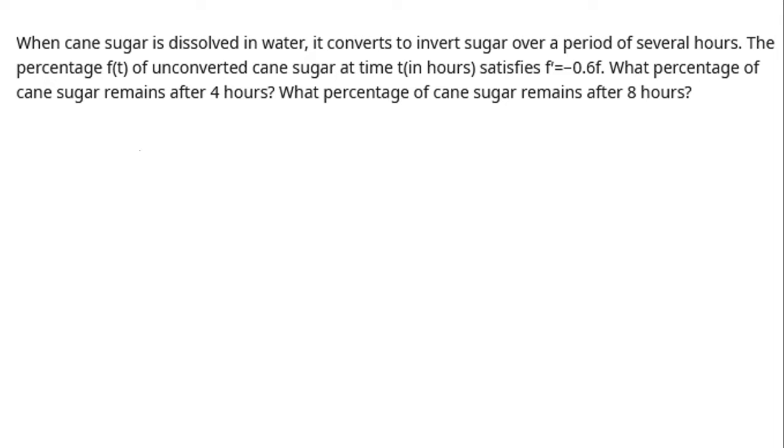We're given the unconverted cane sugar at time t satisfies f prime equals negative 0.6f. So basically what this question is asking is, find the equation of f and see when we plug in 4 and 8, how much is left? What percentage of the original value is left?